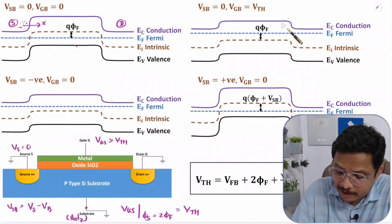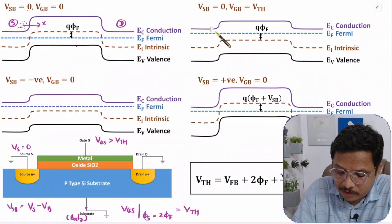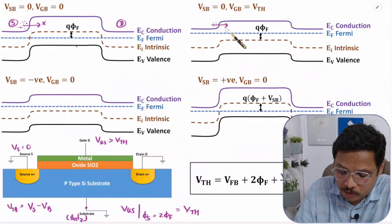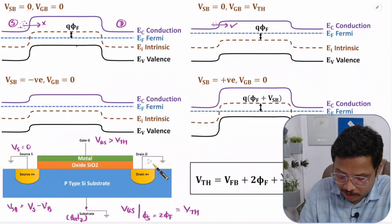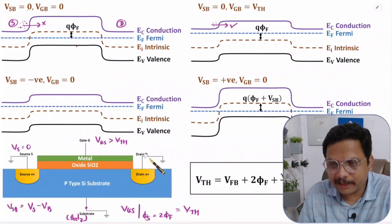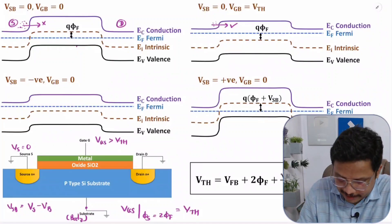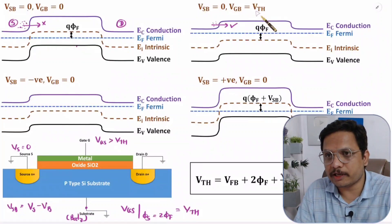Looking at the energy band, previously there was high resistance to electrons, but now there is no high resistance compared to before. If you apply drain-to-source voltage, electrons can flow from source to drain — meaning current can flow. We are not discussing the exact voltage applied, just that there is now less resistance as the inversion layer forms.